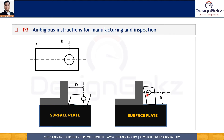Whereas in GD&T, we have datums. We can define primary, secondary, and tertiary datums, specifying in which sequence the datum features are going to touch the surface plate, angle plate, and any other gauge element. So GD&T definitely solves this ambiguous instruction problem.